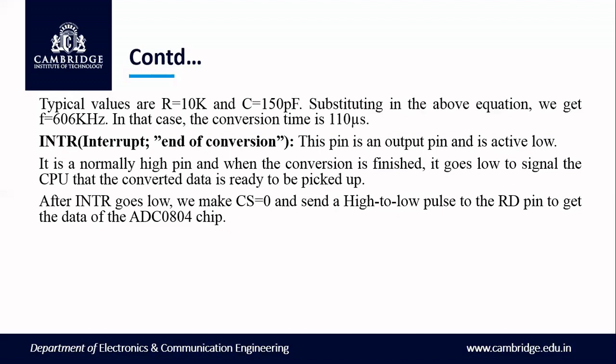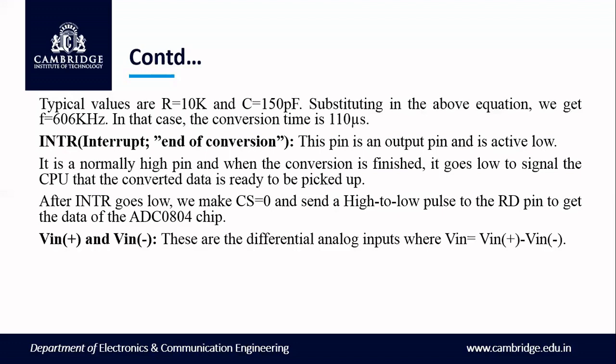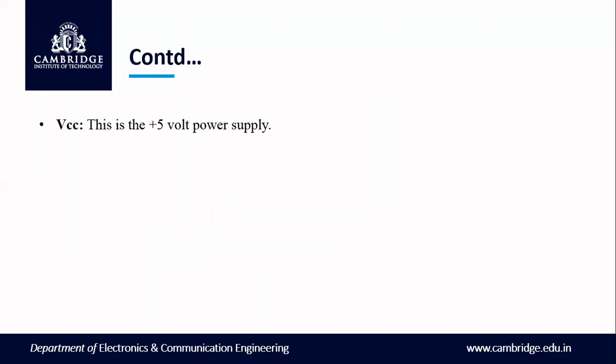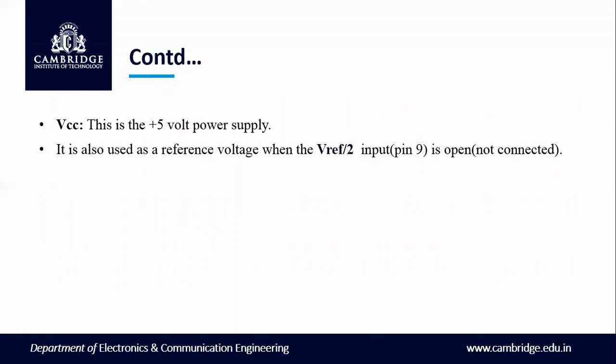VIN plus and VIN minus are the differential analog inputs where VIN is given by VIN+ minus VIN−. Often VIN− is connected to ground, and VIN+ is used as the analog input to be converted to digital. VCC is the power supply — it is also used as a reference voltage when the V-reference by 2 input pin (pin 9) is open. If pin 9 is not connected, then we consider plus 5 volts as the input analog voltage range, and V-reference pin 9 is considered as the reference voltage.